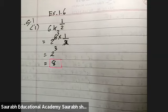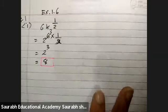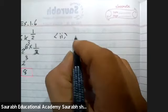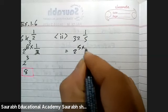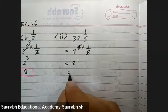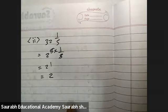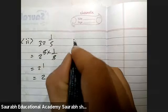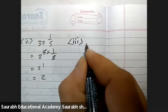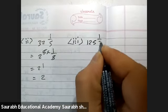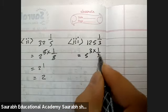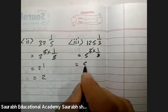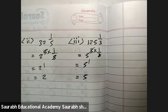Next, second: 32 raise to 1 by 5. 32 means 2 raise to 5, into 1 by 5, so exponent of 2 raise to 1, that is 2. Right? Third: 125 raise to 1 by 3. That is 5 cube into 1 by 3, so 5 raise to 1, answer 5.